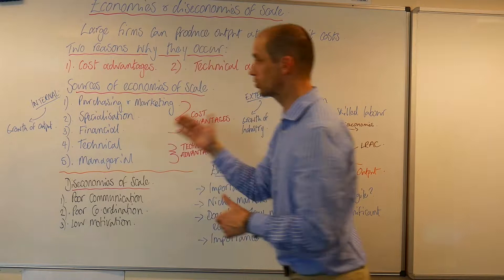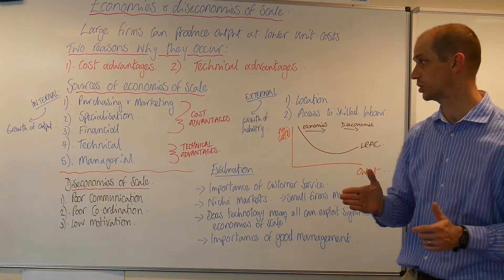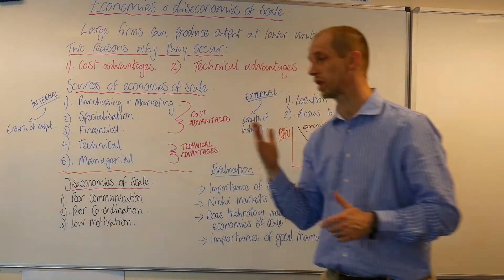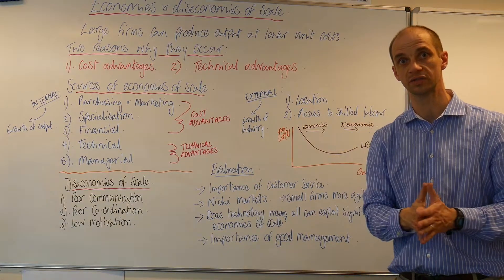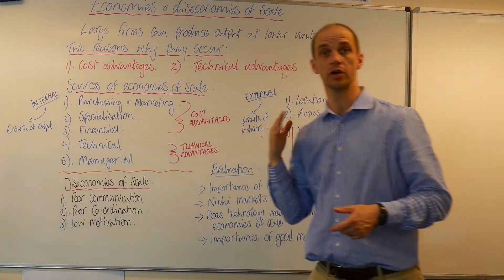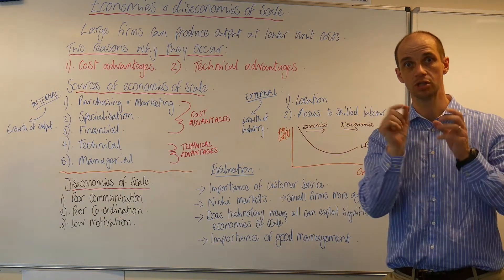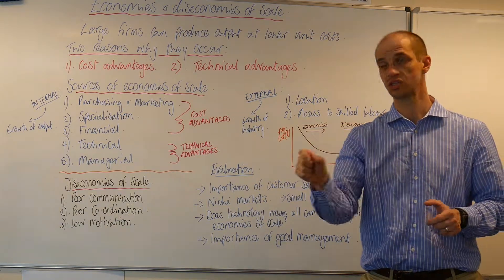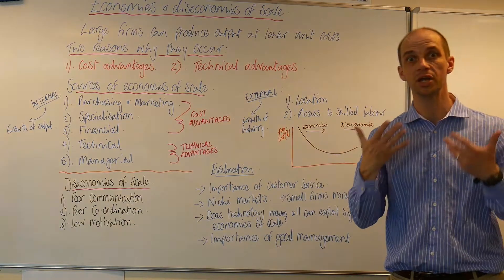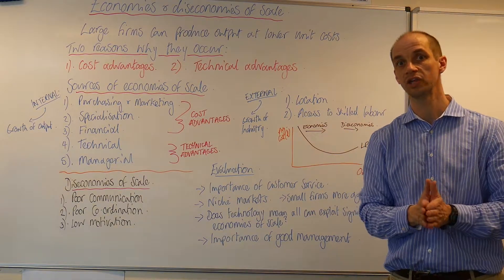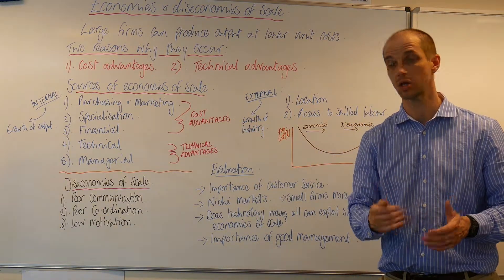We've also got specialisation or division of labour. There is some overlap with the technical economies of scale here, but it does provide a big cost advantage — that repetition, the breakdown and the assembly line can really help generate big gains in efficiency and lead to much lower unit costs.